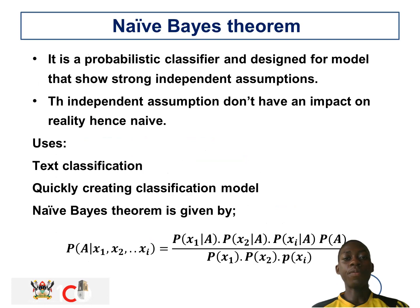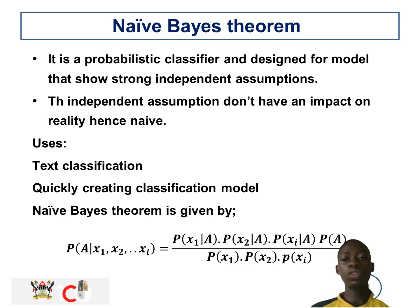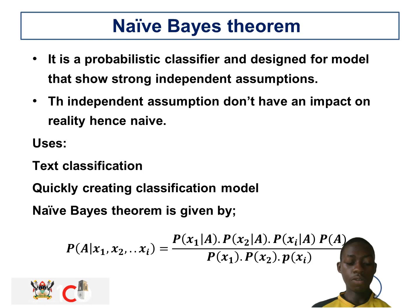Naive Bayes theorem refers to a probabilistic classifier designed for models that show strong independent assumptions. The independent assumptions don't have any impact in reality, hence the term 'Naive.' Its uses include text classification and creating classification models. Naive Bayes theorem is derived from Bayes' theorem, whereby different conditions are assumed independent and you simply multiply to get the Naive Bayes formula.